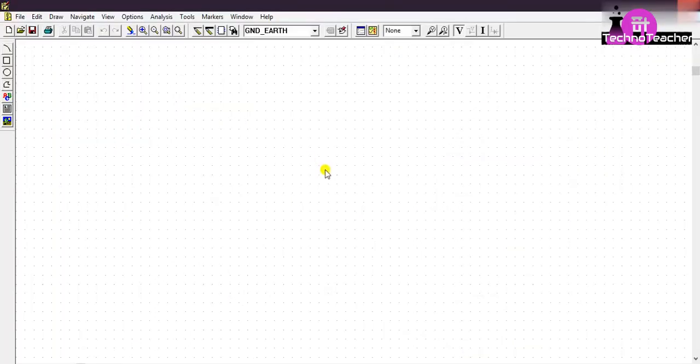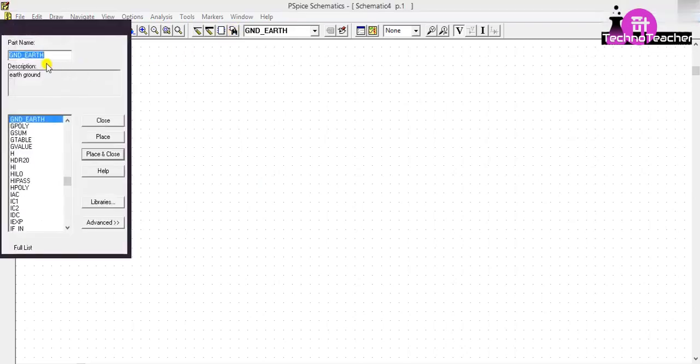Now I have opened the schematic of PSPICE. To draw the schematic we need parts like resistor, transistor, etc. To get that, click on get new parts, then select the required parts. In our case we need one transistor.